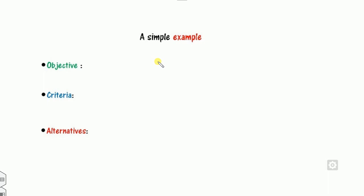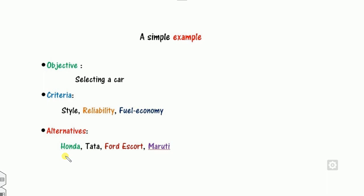For example, in any decision making problem, our task is: what is my objective, what is my criteria, and what are my alternatives? Suppose you want to select a car. If you go to the market, how many brands of cars are available — that is called my alternatives. You can buy either Honda City, Tata, Ford, or Maruti. Once you are selecting a car, what parameters or criteria you have considered in your mind: you want a good stylish car, good reliability, fuel economy, reasonable cost, and so on. The decision is not always unique.